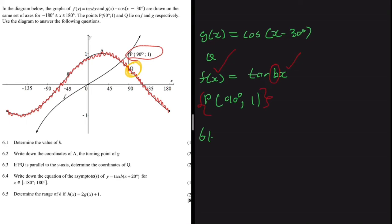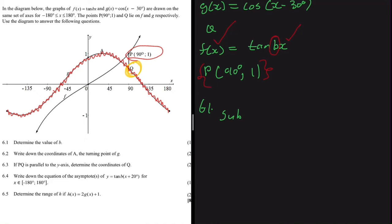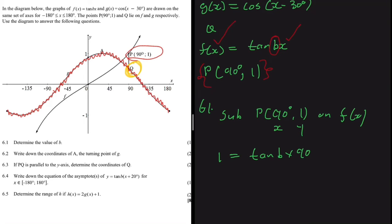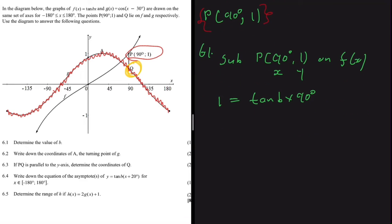Substituting point P(90°, 1) into f(x): x = 90° and y = 1, so we get 1 = tan(b × 90°). We then take the inverse tangent on both sides: tan⁻¹(1) = tan⁻¹(tan(b × 90°)).